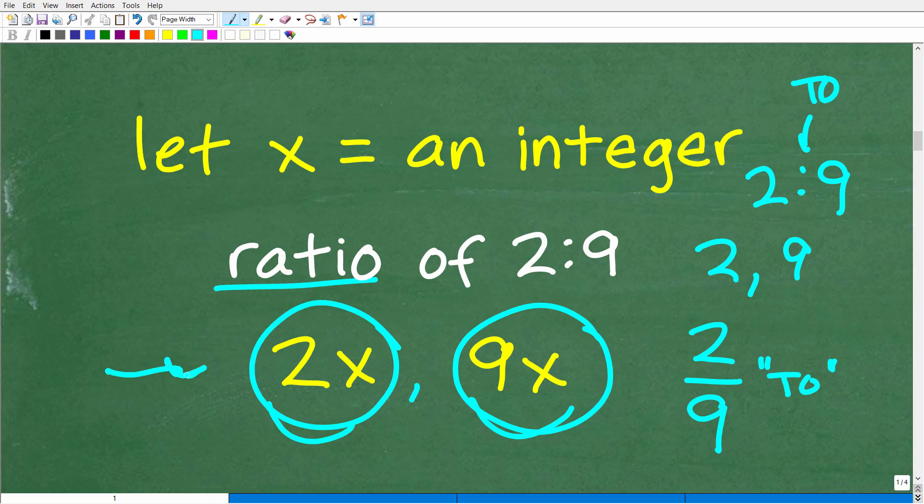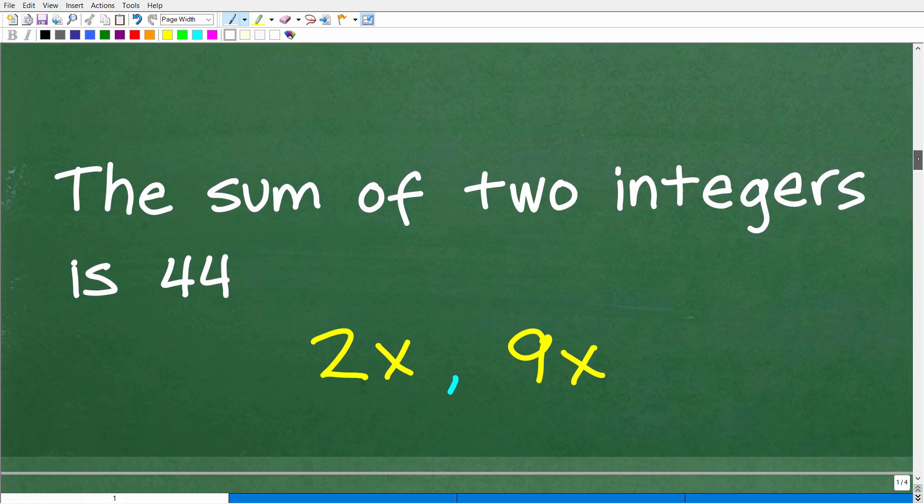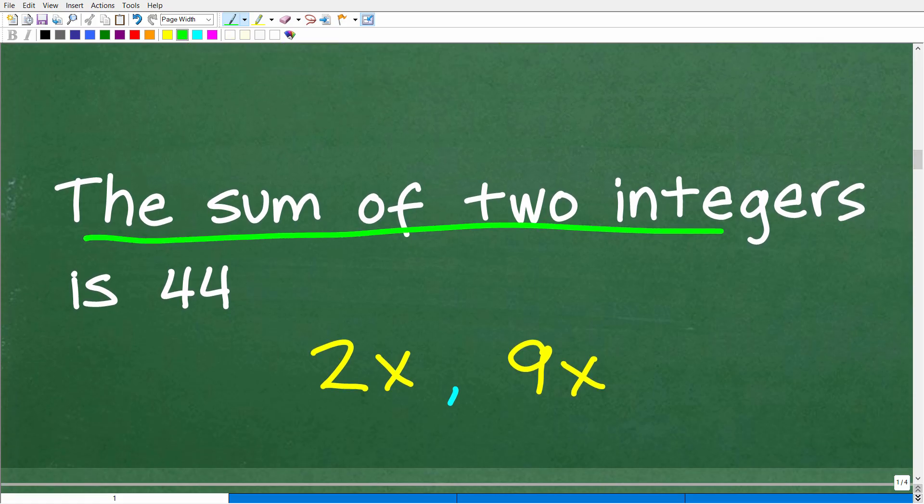So of course, we don't know what x is. But these integers right here, because we're defining x as an integer, have a ratio of two to nine. So hopefully, that makes sense. And now, if you understand that, well, then we have a model representation of our two integers. Now, we need to solve for x. And how can we solve for x? Well, we need to go back to this part of the problem. And this part of the problem said the sum of two integers is 44.